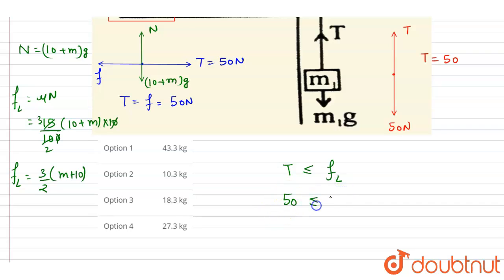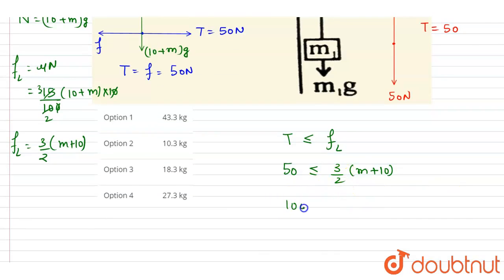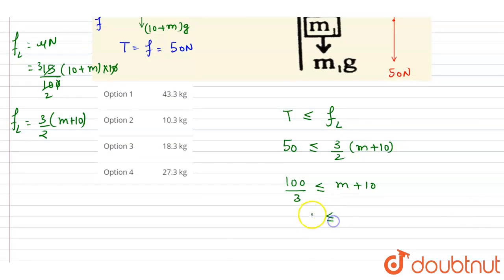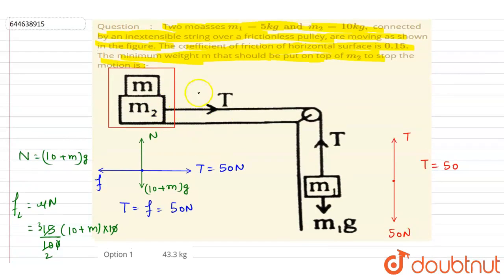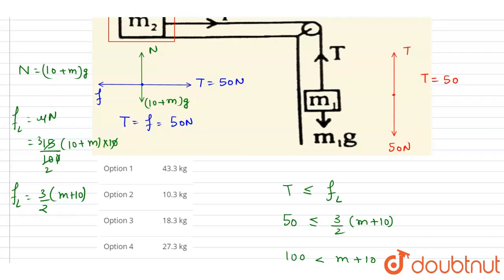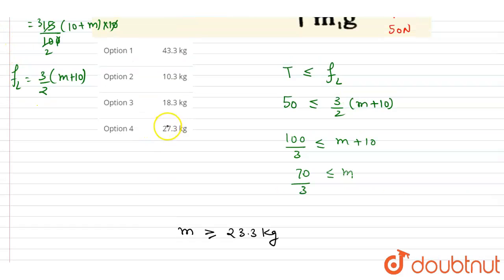The tension force is 50 newton, and it should be less than or equal to the limiting friction. So 100/3 should be less than or equal to the limiting friction expression. Solving, m should be greater than or equal to 70/3. Calculating 70 divided by 3 gives 23.3 kg. So the minimum weight m is 23.3 kg, and option D is the correct answer.